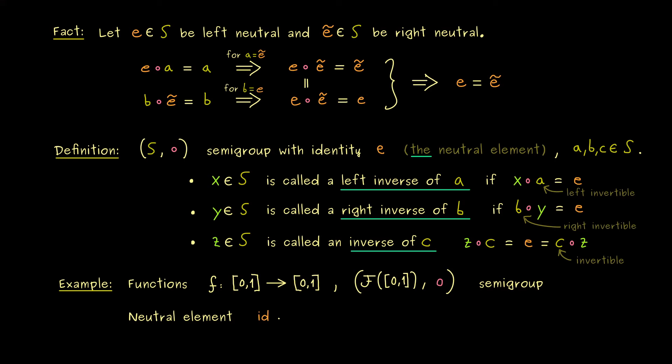Moreover we also know we have a neutral element given by the identity map. So this is just a map that sends x to x again. Indeed this is not hard to check that under the composition of functions this is our neutral element.